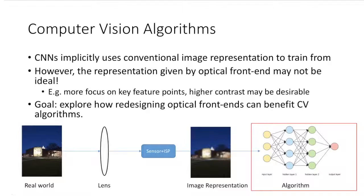For example, if we're looking at some sort of image classification task, having more focus on key feature points or having higher contrast may be desirable. As such, one of the main goals of this research is to explore how redesigning optical front ends can benefit computer vision algorithms.